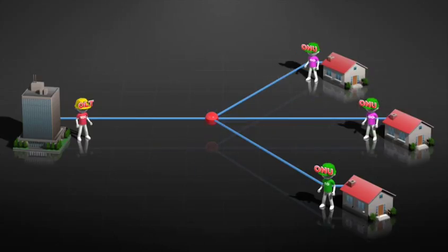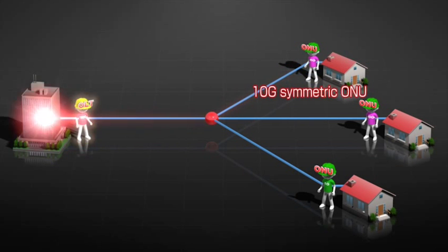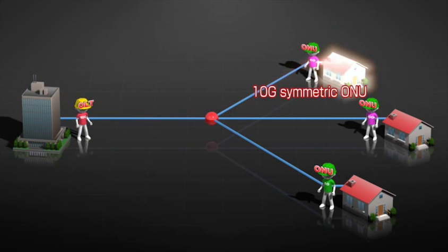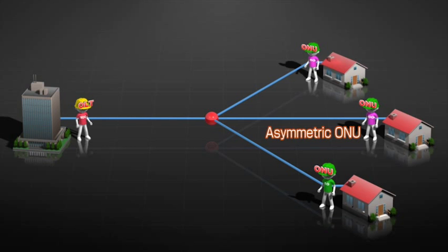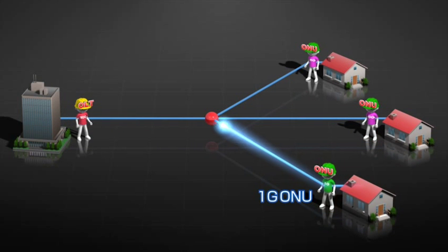An NTT access network accommodates three different types of ONU: 10G symmetric ONUs, which can handle both upstream and downstream data at 10 gigabits per second; 10G asymmetric ONUs, which can only receive downstream data at the higher bitrate of 10 gigabits per second; and conventional 1G ONUs.